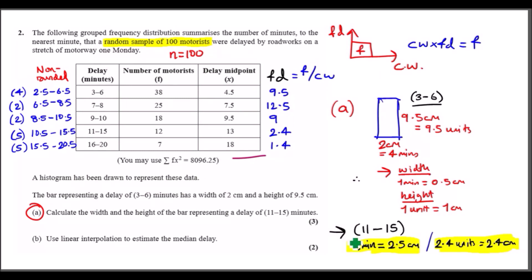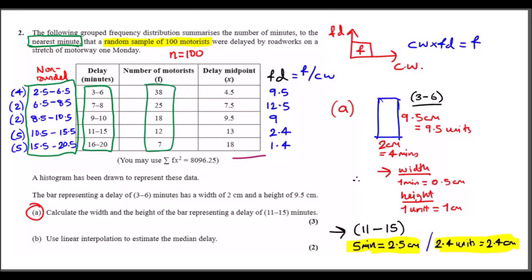For this question I've solved it all in advance because there would be a lot of calculation. The grouped frequency distribution summarizes the number of minutes to the nearest minute. When you see 'nearest minute,' notice that there are gaps after every interval — between six and seven there's nothing — because values have been rounded. We need the non-rounded values, so we apply plus or minus 0.5 on each side. They have a random sample of 100 motorists delayed by roadworks, so n = 100 and total frequency sums to 100.